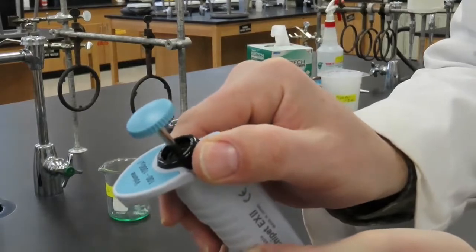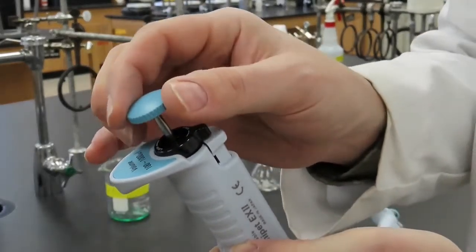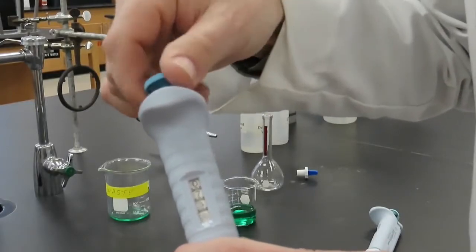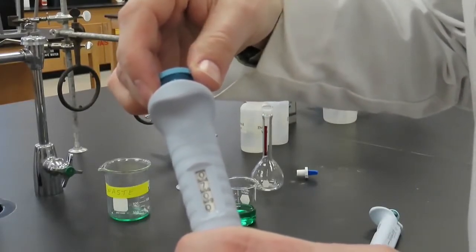For the smaller pipette, we follow the same procedure. Unlock the locking ring and adjust the volume by rotating the plunger. Now it is set at 700 microliters.